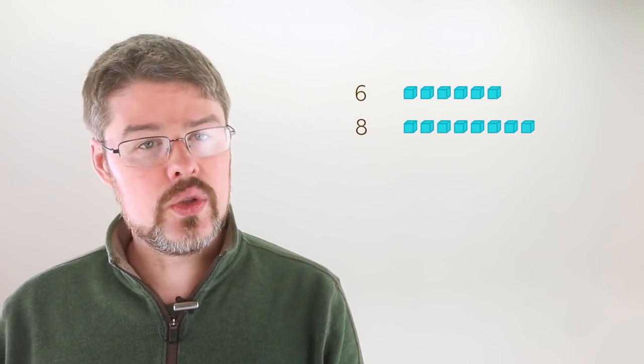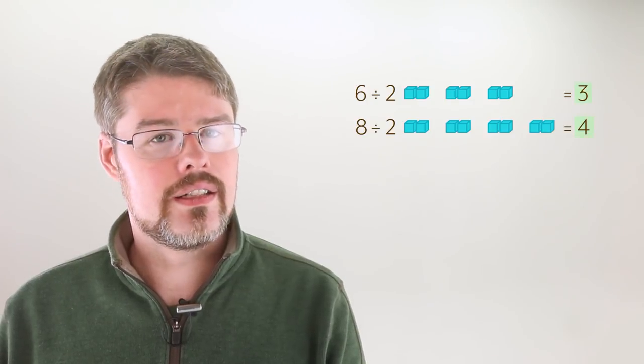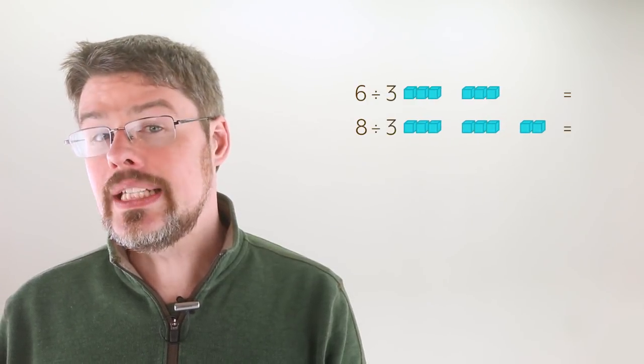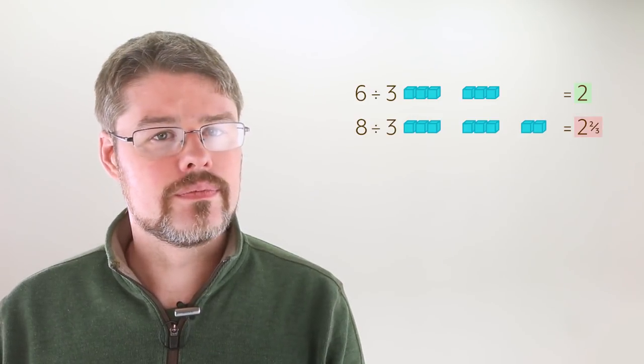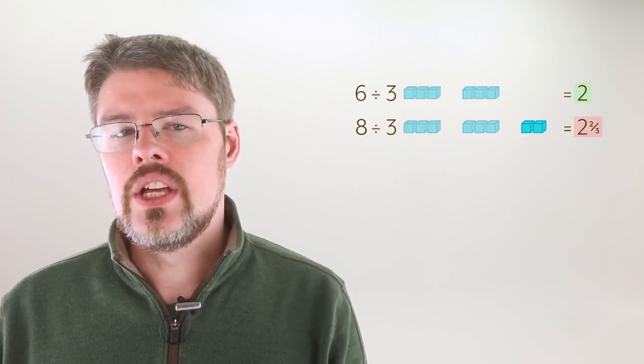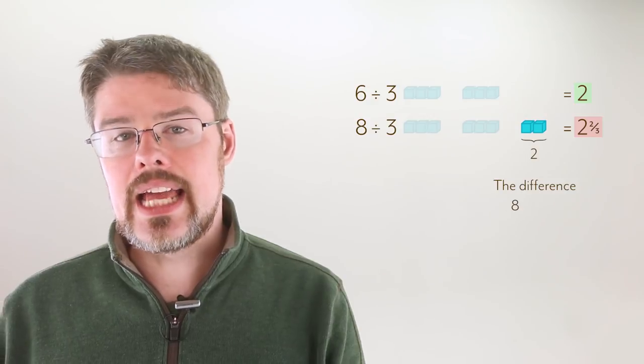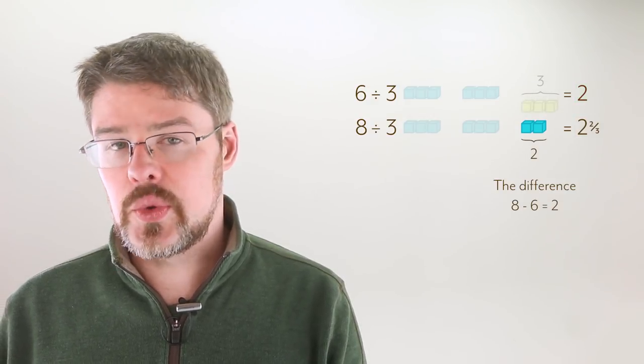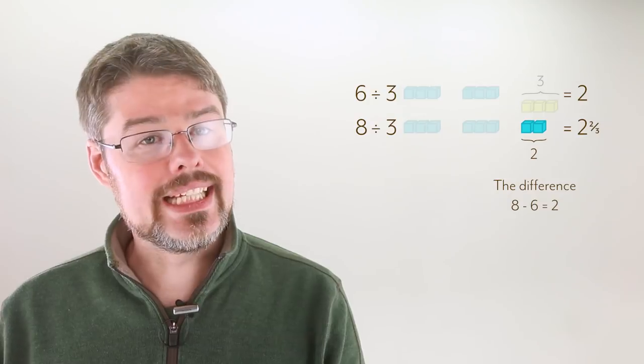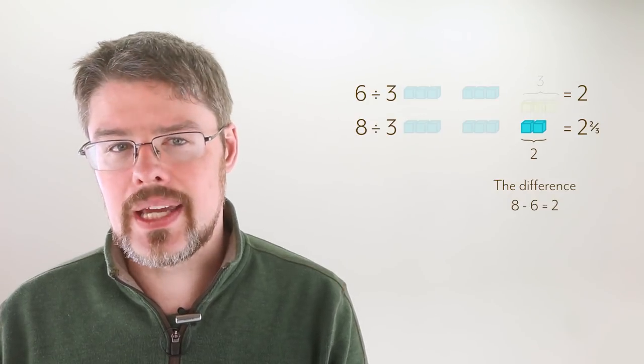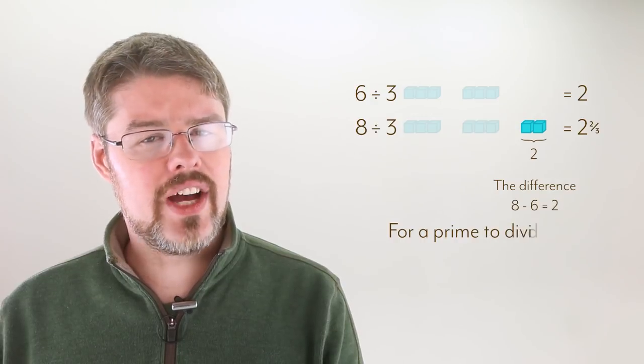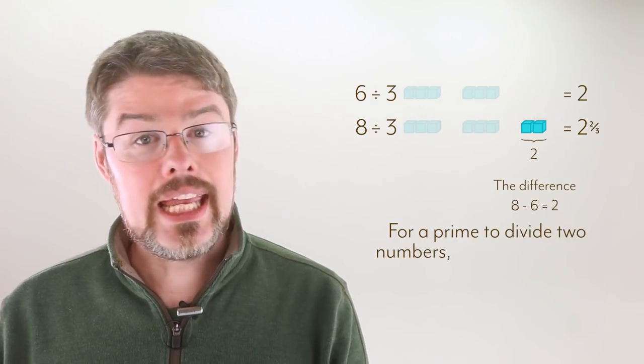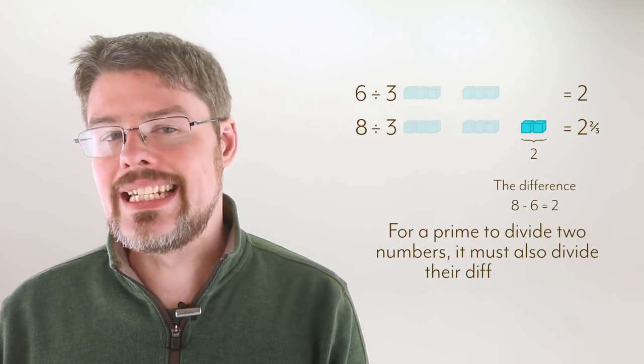Think about 6 and 8. We know that 2 divides both of them, as we can see here. However, 3 only divides 6, not 8. We can see it here. But there's another clue. You see, the difference between 6 and 8 is 2. There's no way to fit a 3 in that difference, so 3 cannot divide 8. There's not enough space. The takeaway? For some prime to be able to divide two different numbers, it must be able to divide the difference as well.